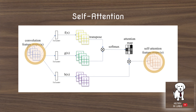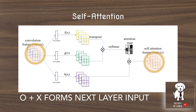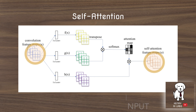The self-attention feature maps O are concatenated with the original convolution feature maps X, meaning they're stacked onto each other along the channel axis. So if there were 32x32x16 convolutional feature maps and 32x32x16 self-attention feature maps of the same spatial resolution, concatenating them together gives you 32x32x32 — 32 feature maps total.